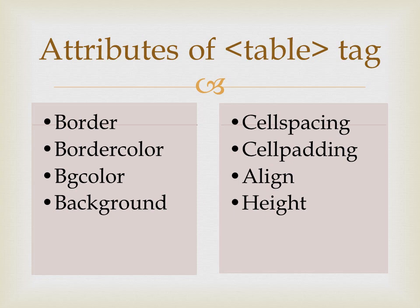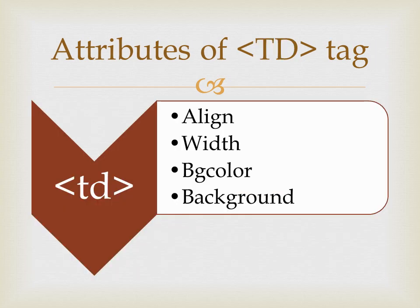Height and width specify the dimensions available on the screen. Now let's come to the TD attribute tag. There are four main attributes for TD: align — that is alignment: right, left, center, or justify.